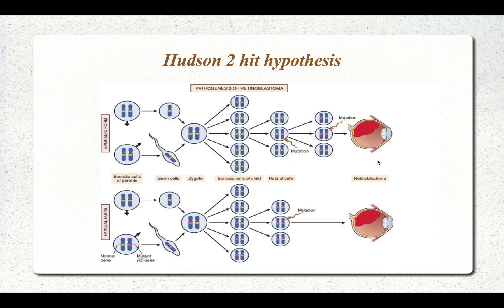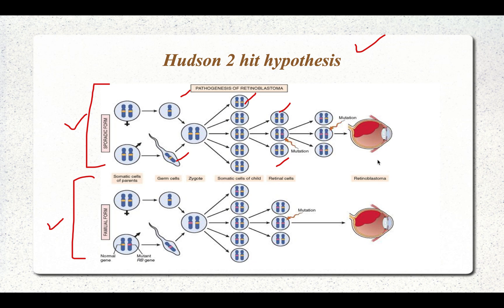A very important concept associated with the RB gene is the Knudson two-hit hypothesis. There are two forms of retinoblastoma: sporadic and familial. In the sporadic form, normal retinal cells undergo a first mutation followed by a second hit, and then retinoblastoma develops. Two hits are required in the sporadic form.